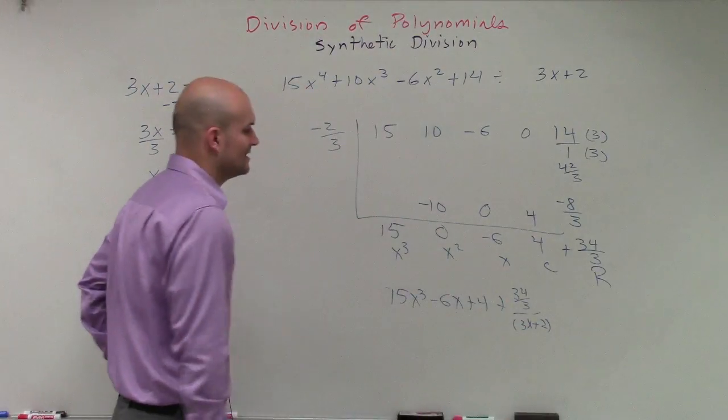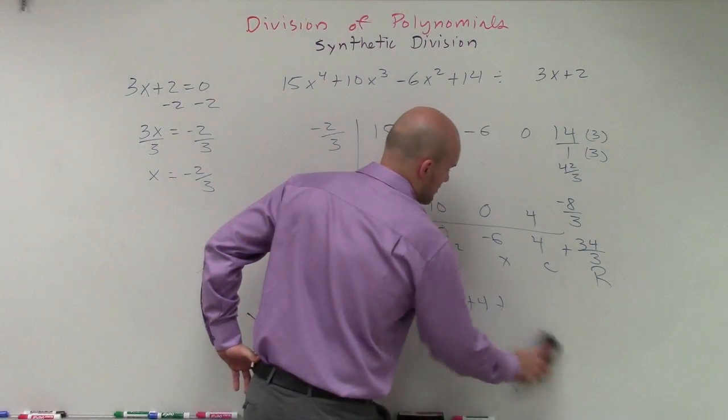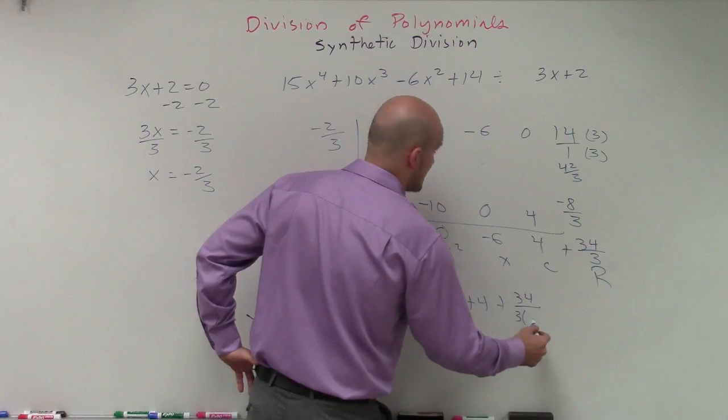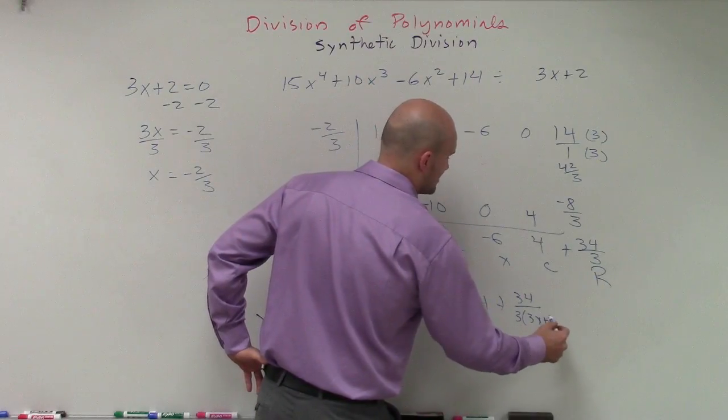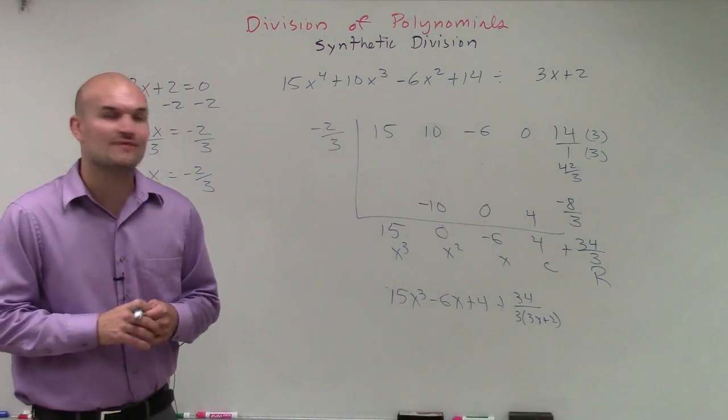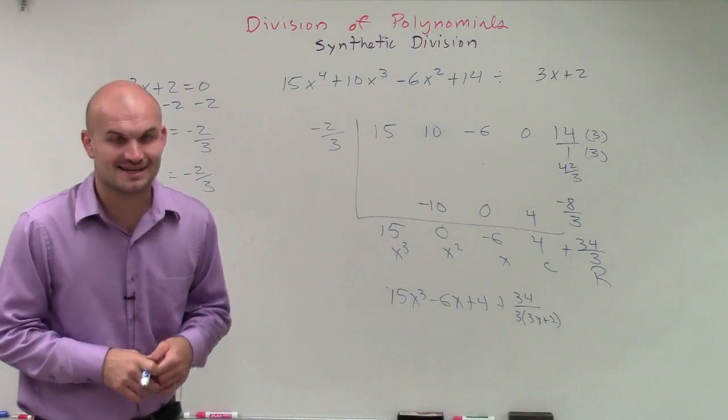But then again, to kind of get this off of our denominator, we can rewrite this as 34 over 3 times 3x plus 2. So there you go, ladies and gentlemen. That is how you solve using synthetic division or find the quotient. Thanks.